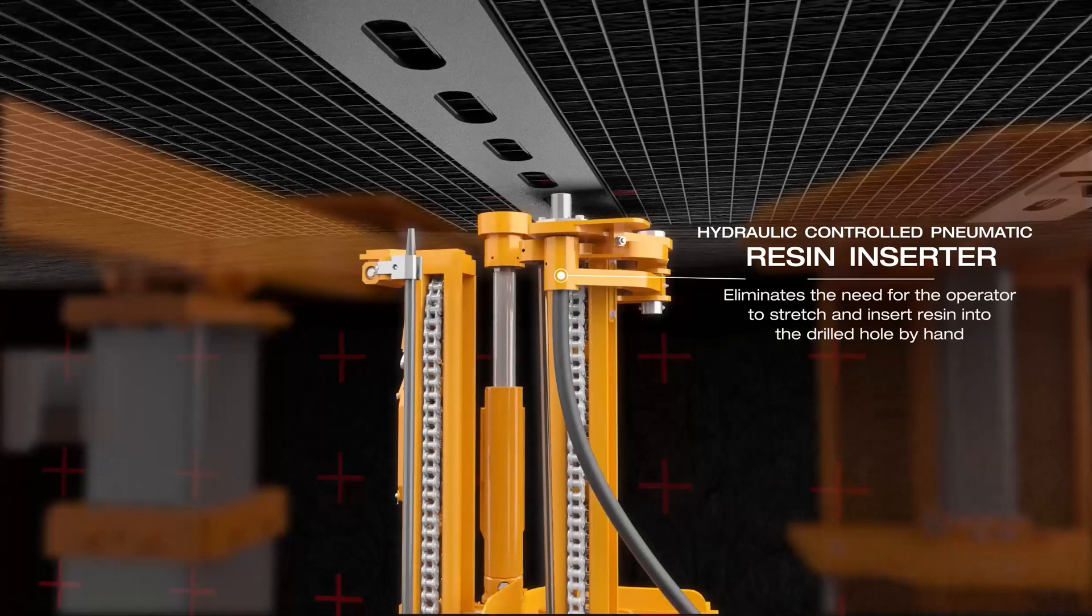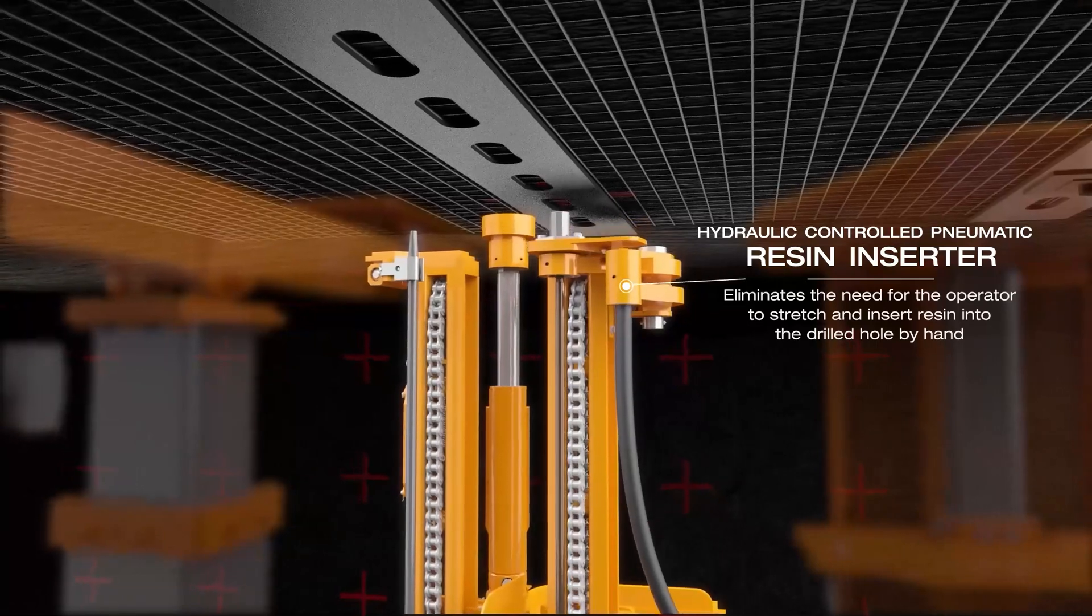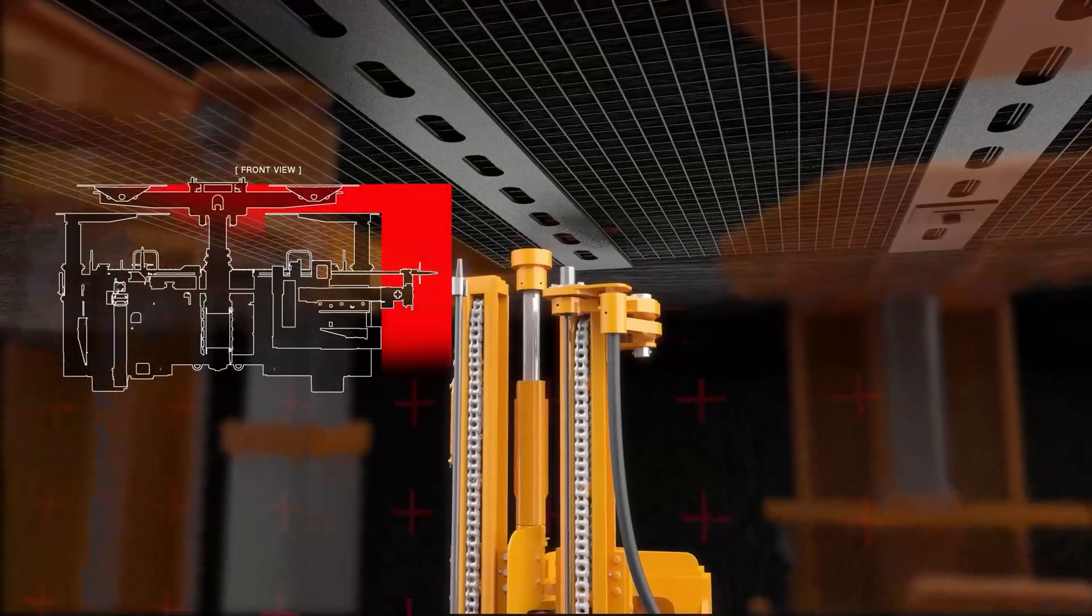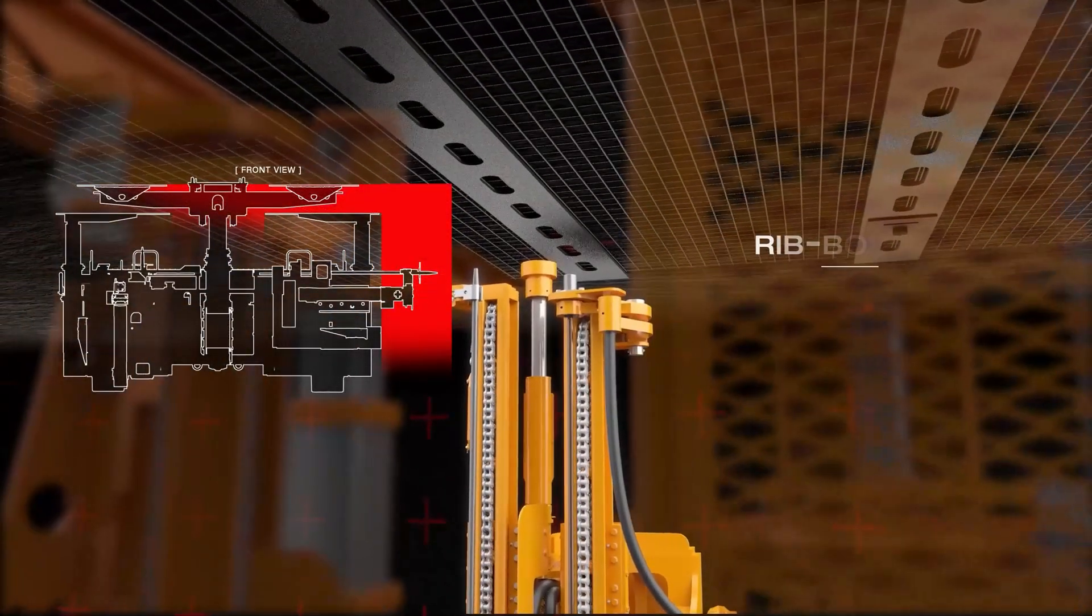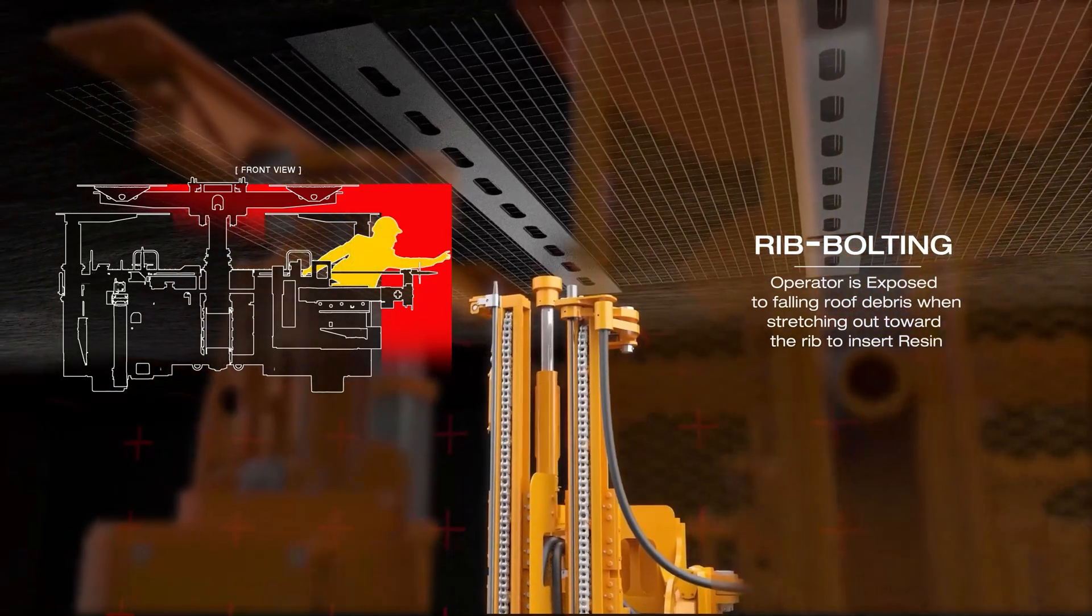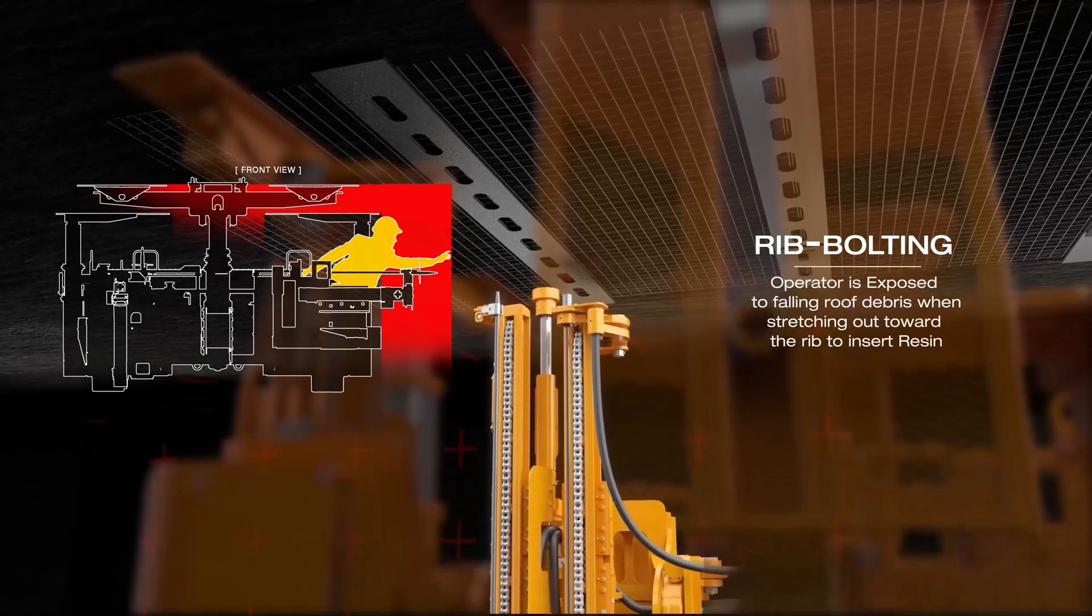A hydraulic-controlled pneumatic resin inserter eliminates the need for the operator to stretch and insert resin into the drill hole by hand. This reduces operator effort and improves safety by keeping the operator under the canopy at all times, especially true during rib bolting, where an operator is exposed to falling roof debris when stretching out towards the rib to insert resin.